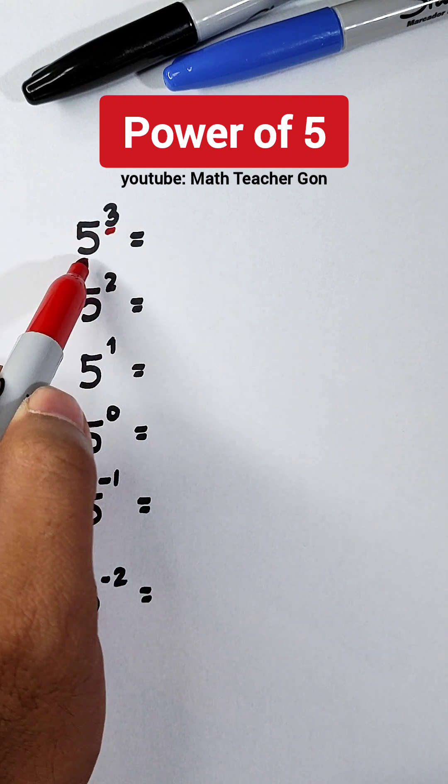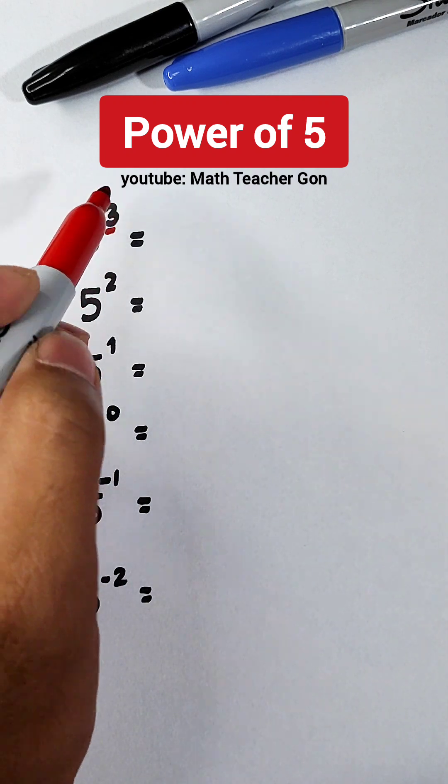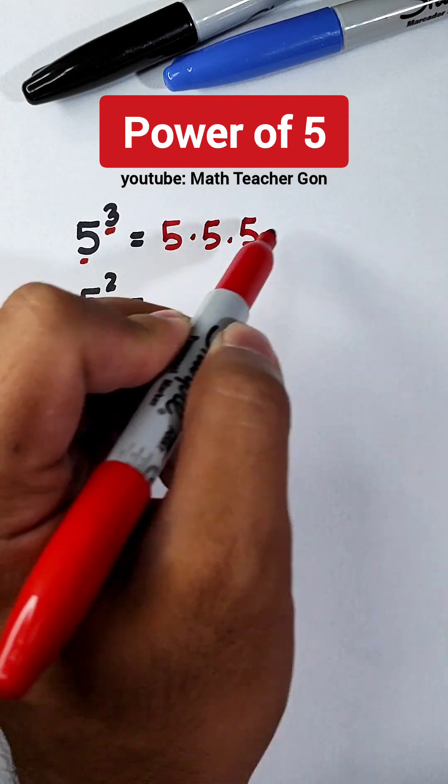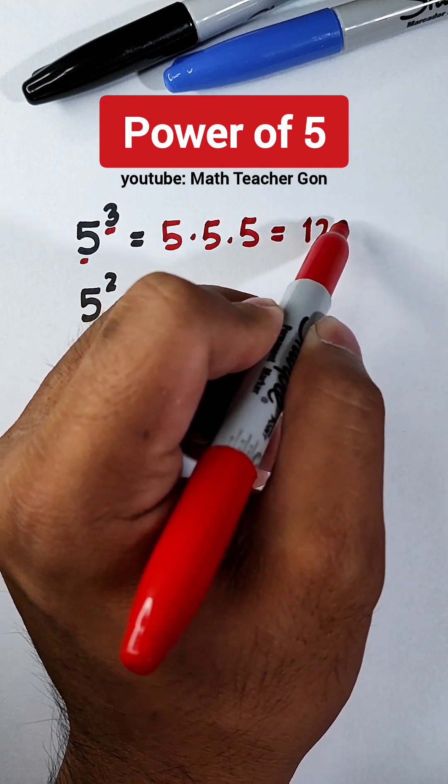What you need to do is to multiply this base 3 times because the exponent is 3. So it will become 5 times 5 times 5, which is equal to 125.